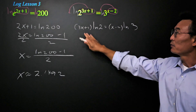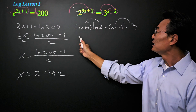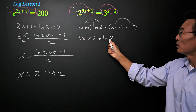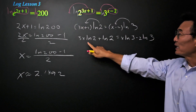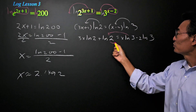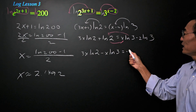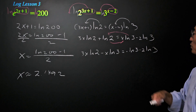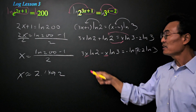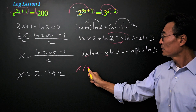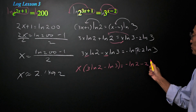Notice the parentheses for both the 3x plus 1 and the x minus 2. Next, we need to distribute natural log of 2 and also natural log of 3, giving us 3x natural log of 2 plus natural log of 2 equals x natural log of 3 minus 2 natural log of 3. We want to isolate everything with x to the left side and bring everything without x to the right side. Where we get 3x natural log of 2 minus x natural log of 3 equals negative natural log of 2 minus 2 natural log of 3.